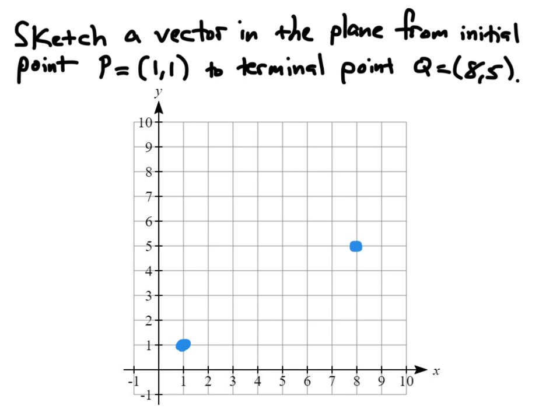So we start by sketching these two points and then drawing a directed line segment from point (1,1) to the point (8,5). And this will be our vector PQ, since we have initial point P and terminal point Q.